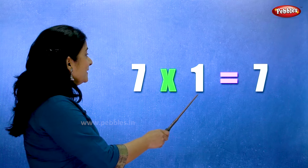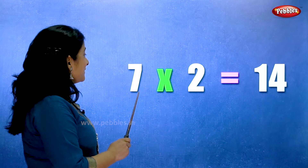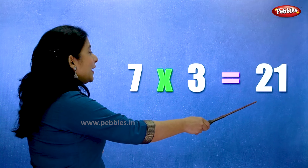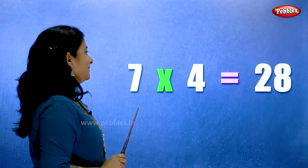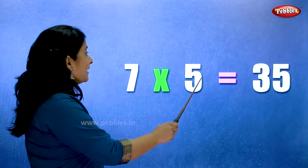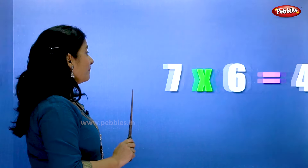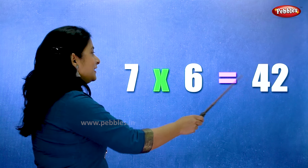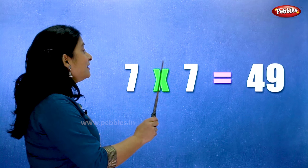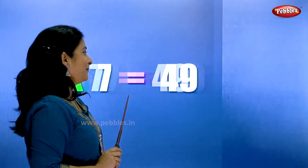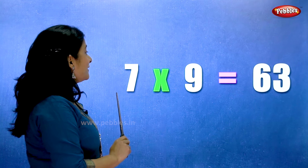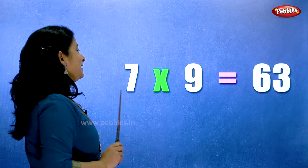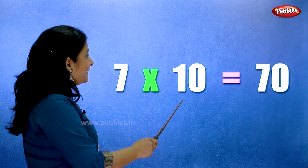Seven ones are seven. Seven twos are fourteen. Seven threes are twenty-one. Seven fours are twenty-eight. Seven fives are thirty-five. Seven sixes are forty-two. Seven sevens are forty-nine. Seven eights are fifty-six. Seven nines are sixty-three. Seven tens are seventy.